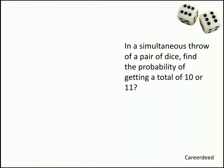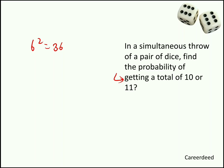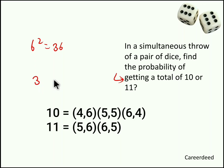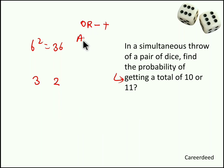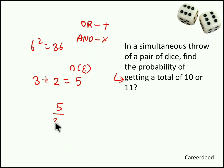In a simultaneous throw of a pair of dice, find the probability of getting a total of 10 or 11. Total sample space = 6² = 36. From the triangle, sum 10 occurs 3 times and sum 11 occurs 2 times. Since we have the word 'or', we sum the events: 3+2 = 5. So the probability of getting a total of 10 or 11 is 5/36.